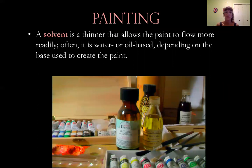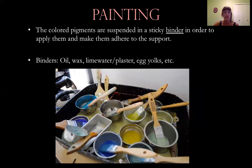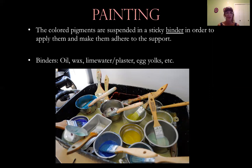The solvent is the thinner that allows paint to flow more readily, more easily. Often it's water-based, sometimes oil-based, depending on what kind of paint medium you're using. The color pigments are often suspended in a sticky binder in order to apply it to a support. Binders might include oil for oil paintings, wax for encaustic, lime water and plaster for fresco painting, and egg yolks used for tempera, and so forth.